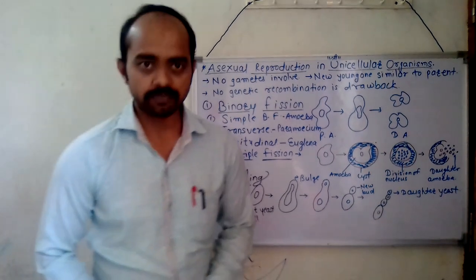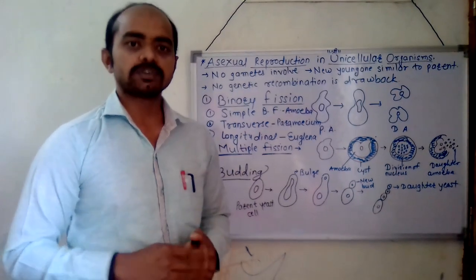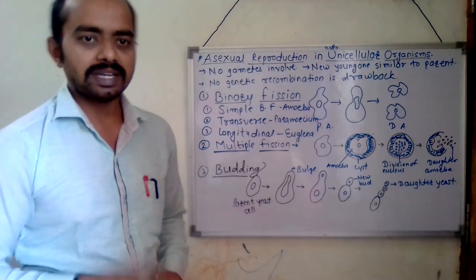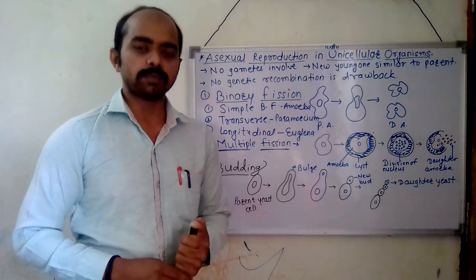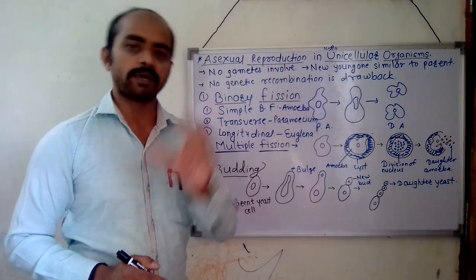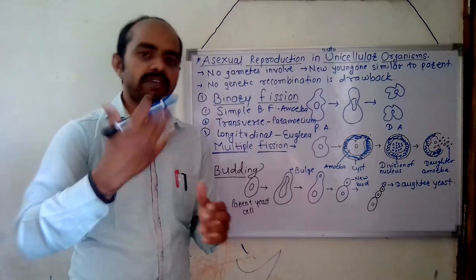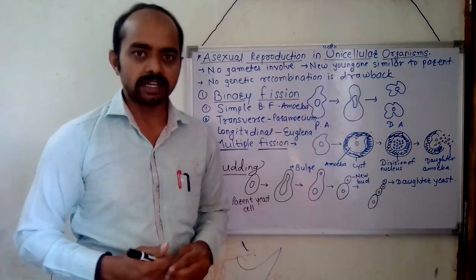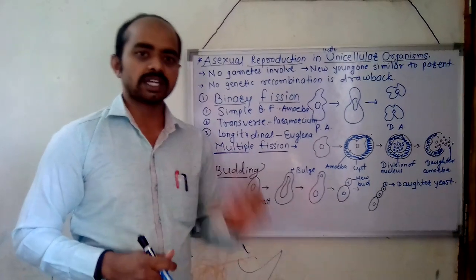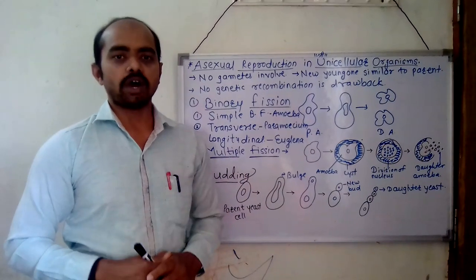What is meant by reproduction? Reproduction is a process by which organisms reproduce a new young one that is identical to their parents. Reproduction is the basic and important characteristic property of all living organisms. All living organisms have basic characteristic properties which show whether an organism is living or non-living, and reproduction is amongst those basic characteristic properties.